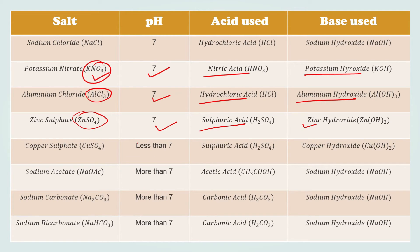For copper sulfate (CuSO4), the acid used is sulfuric acid (H2SO4) and the base is copper hydroxide (Cu(OH)2). Its pH is less than 7, which means that this salt is acidic.